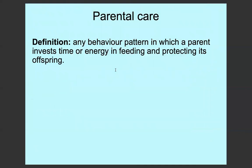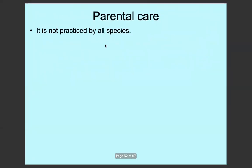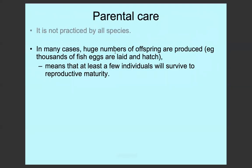Parental care is any behaviour pattern in which a parent invests time or energy in feeding and protecting its offspring. Not all species practise parental care. In a lot of cases, huge numbers of offspring are produced — like fish eggs — which means that even though there's very low parental care and no parent to protect or feed the young, the chances of at least a few individuals surviving are much higher because there are so many eggs laid and hatched. For example, a fish might lay a thousand eggs, and with a one-in-a-thousand chance of surviving to maturity, only one would actually survive.